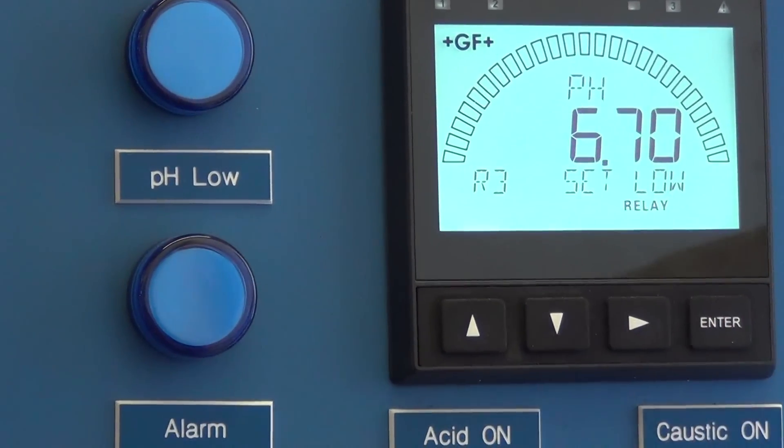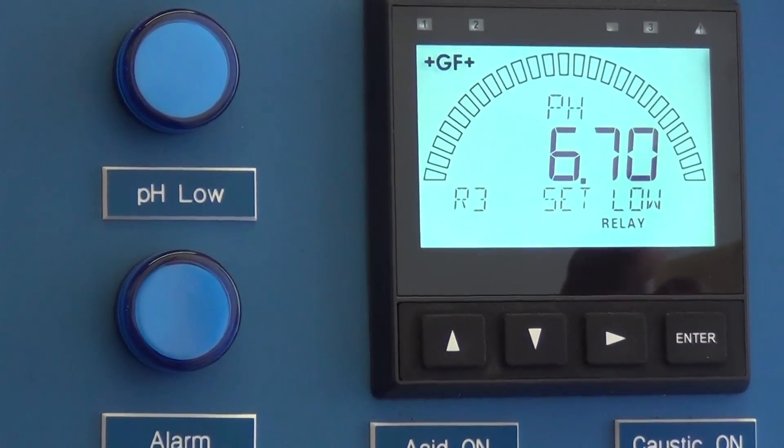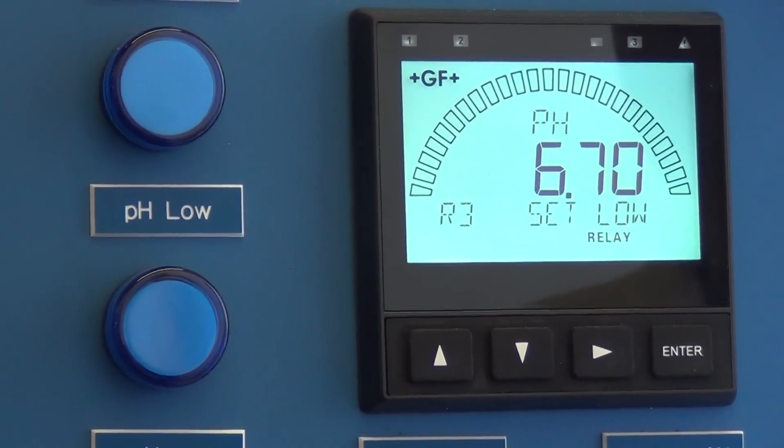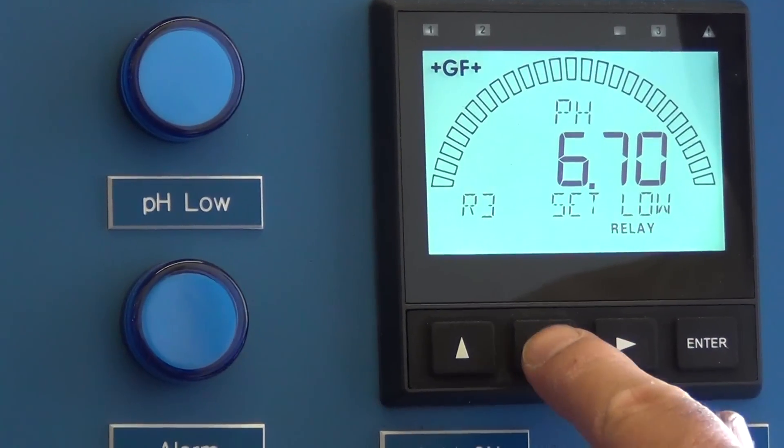Now if I want to set the acid pump, or I want to set the operating window for pH, for the high and low pH alarms, I would continue in this menu.